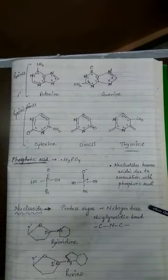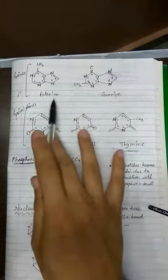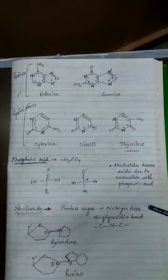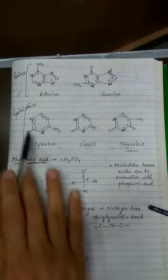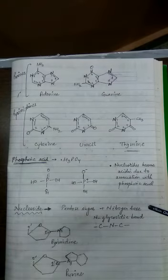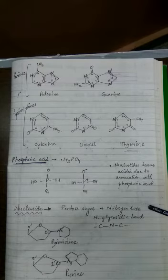The second difference between DNA and RNA is that adenine and guanine are both common to DNA and RNA. Cytosine is the only pyrimidine common to both. However, when it comes to uracil and thymine, RNA carries uracil.